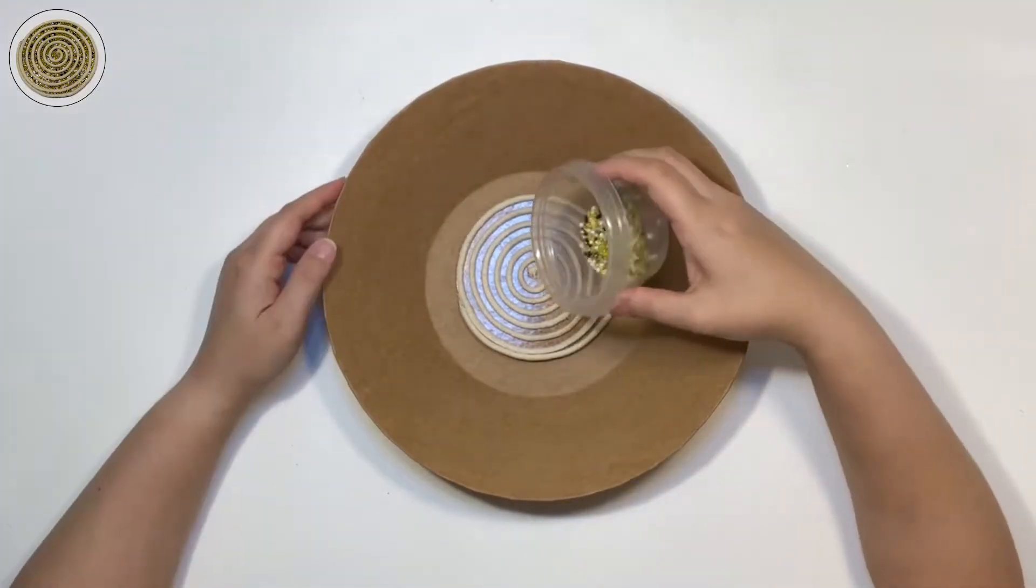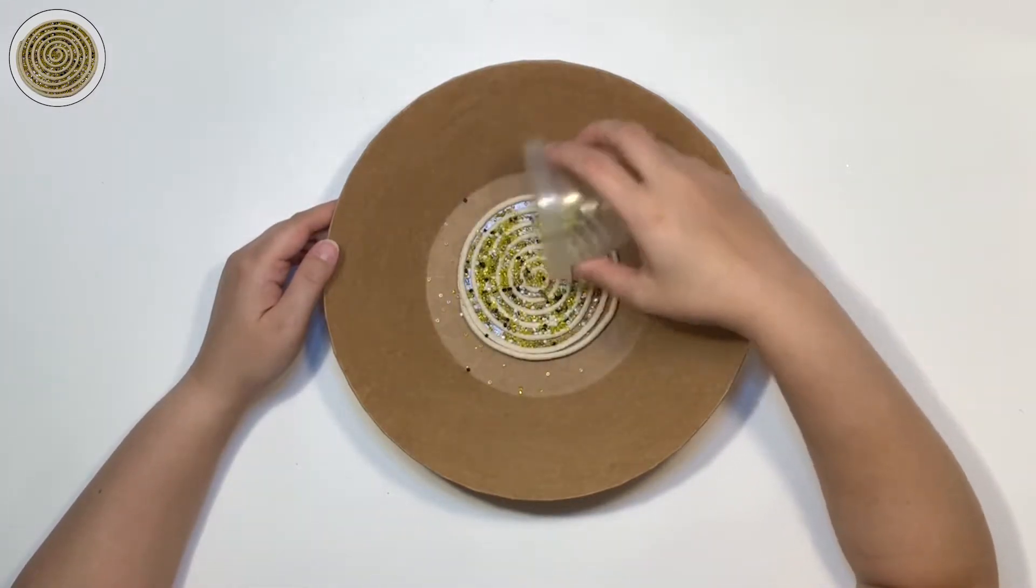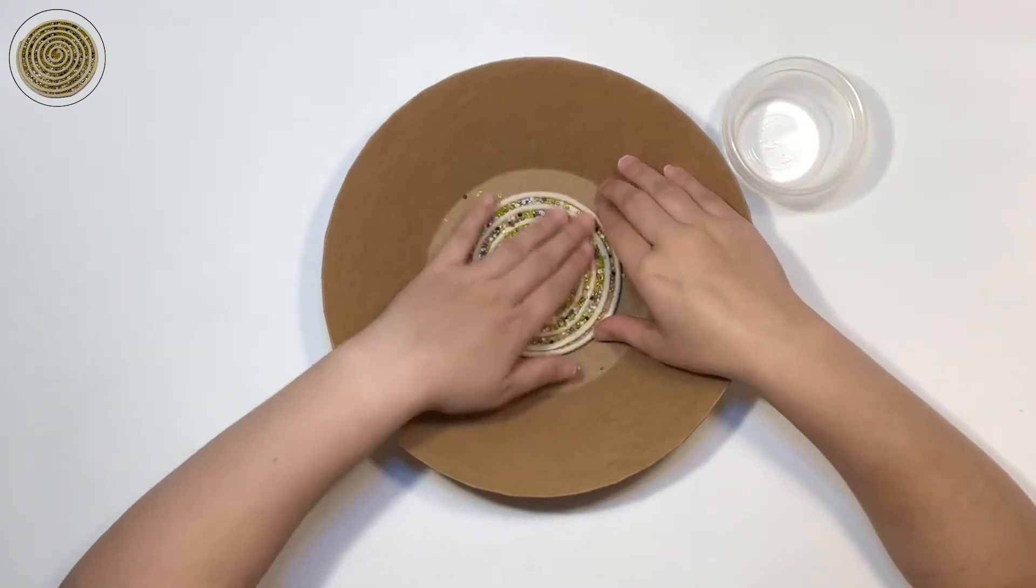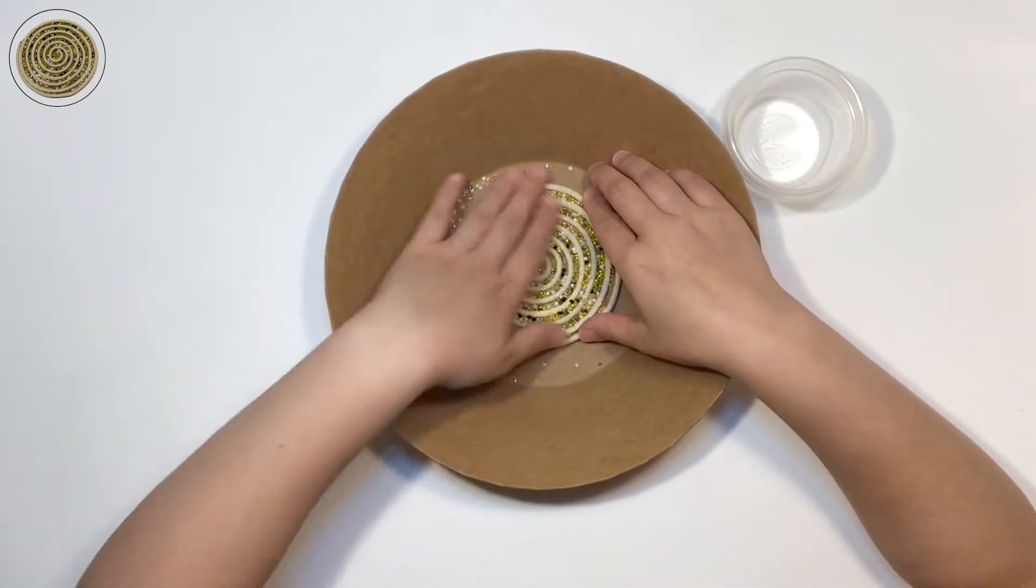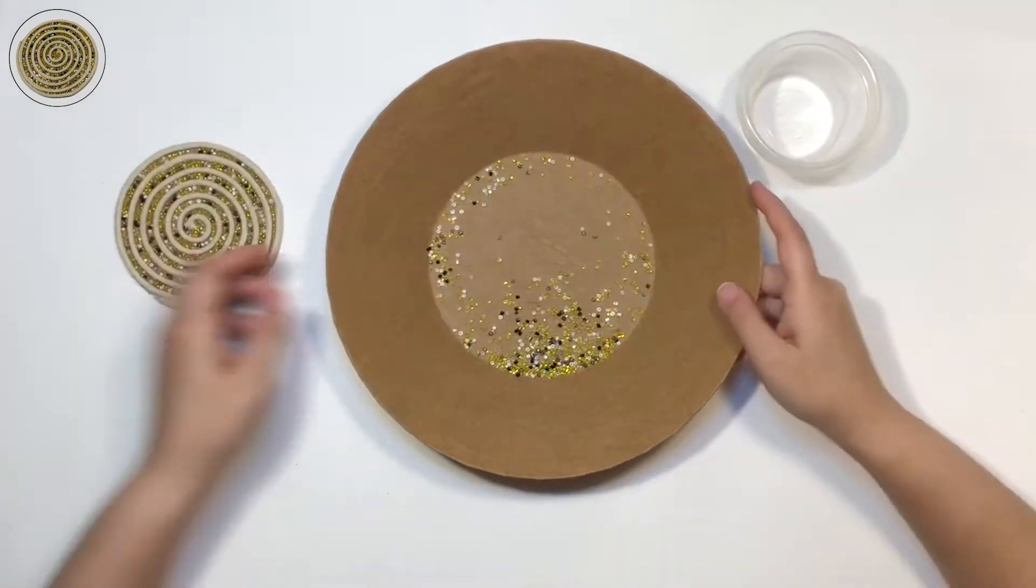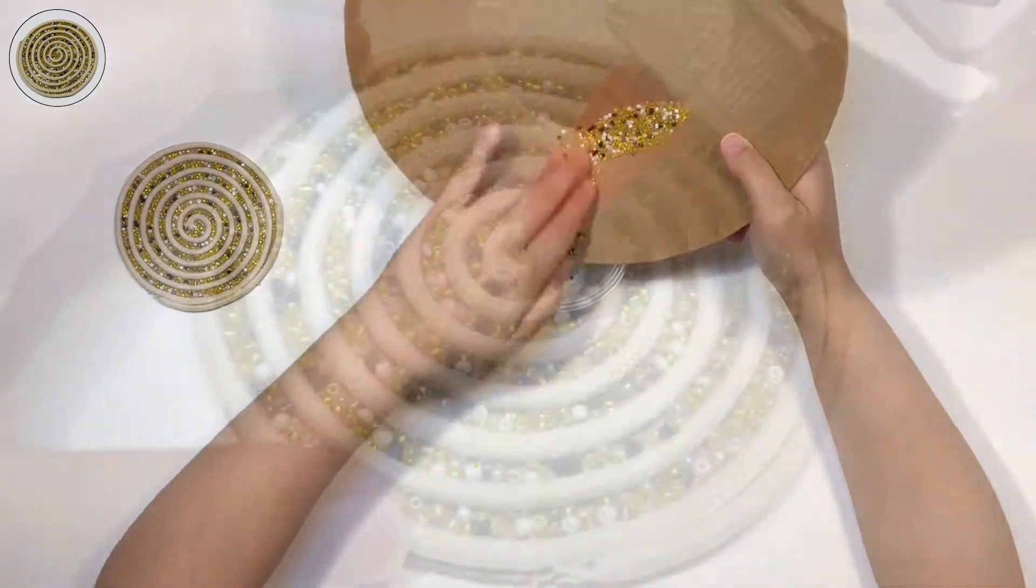Place your coaster in a work bowl and carefully pour the bead mixture over it. Use your hands to spread the beads out and make sure there are no empty spots. Once the coaster is sufficiently covered, flip it on its side to shake off any excess beads. You can save your bead mixture for another coaster or project.